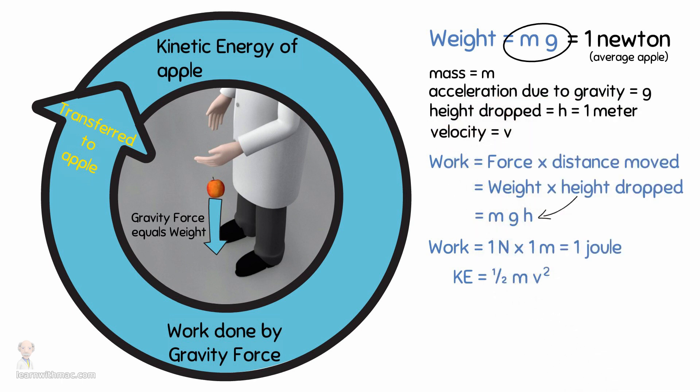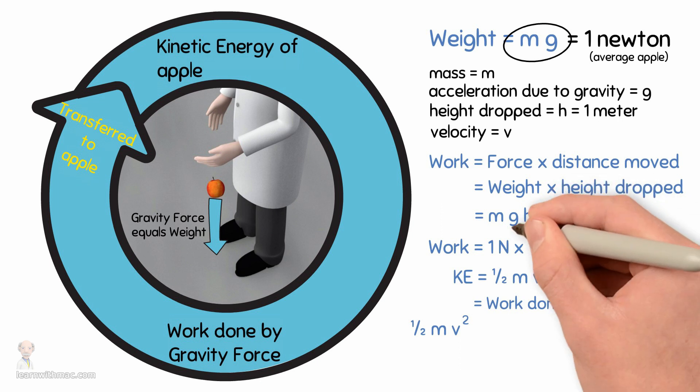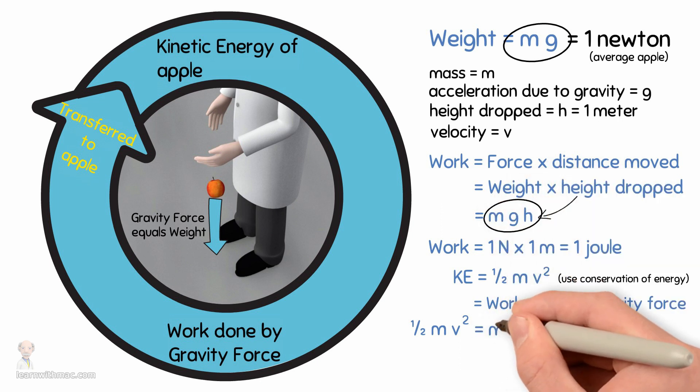So let's use the conservation of energy to calculate the velocity of the apple just before it hits the ground. The kinetic energy of the apple must be equal to the energy transferred to it by the work done by the gravity force. So that is, a half mv squared must equal one joule, and we calculated this was due to the weight of the apple mg times the height dropped h. So we have half mv squared equals mgh.